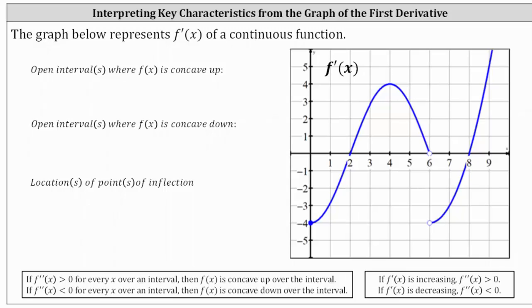We know if the second derivative is positive over an interval, then f of x is concave up, and if the second derivative is negative over an interval, f of x is concave down. But we're not given the graph of the second derivative, we're given the graph of the first derivative.